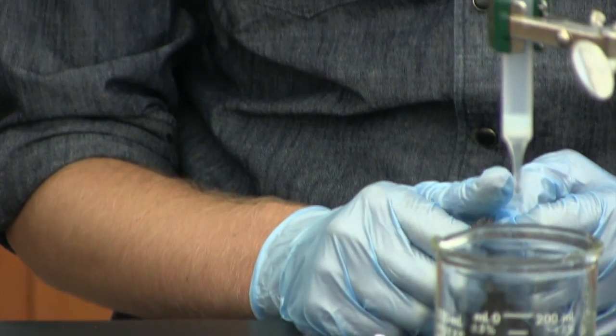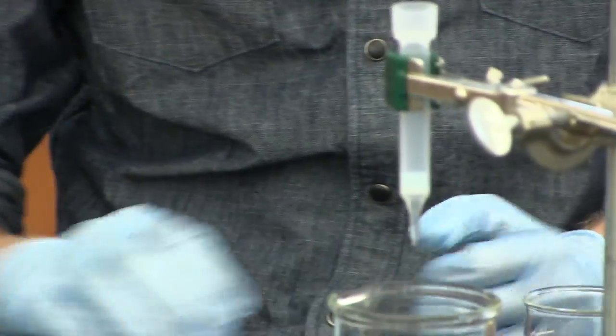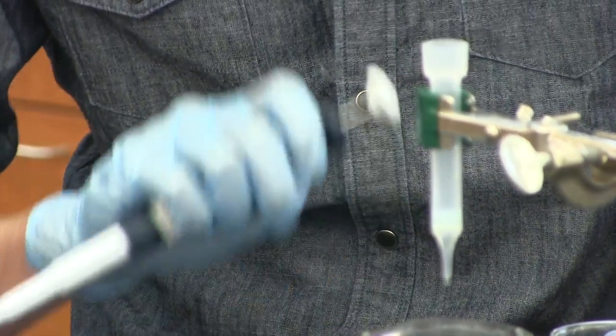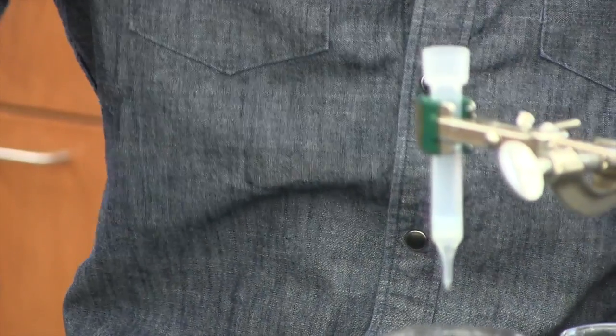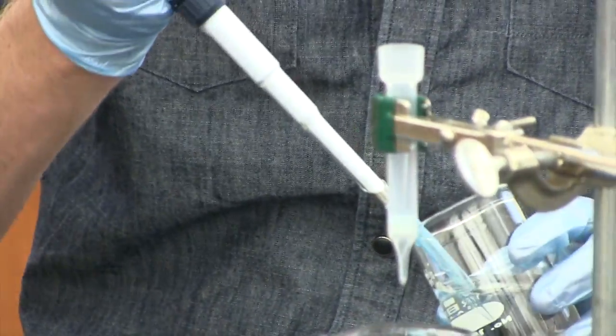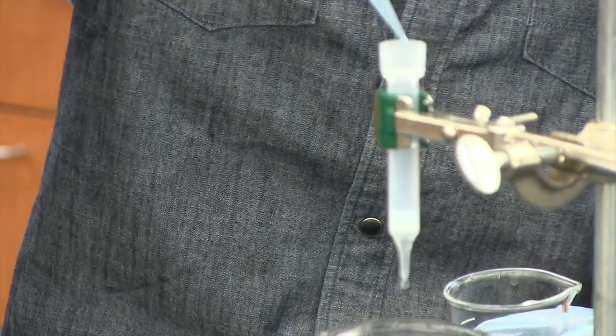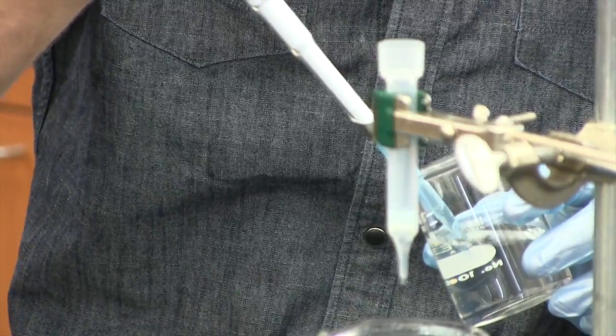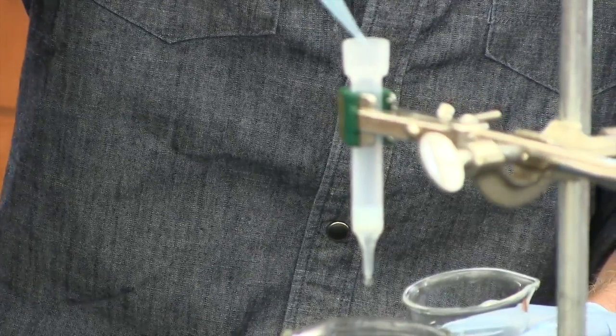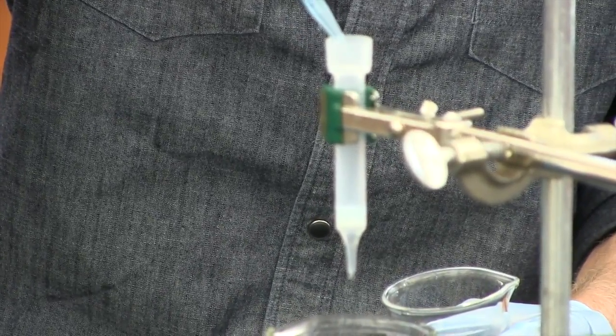With a pipette, gently add more buffer to the top as it's running. We want to fill it up again to the top so that we can put the glass wool on top and soak up the buffer just like we did with the frit. You need to be careful when you're putting buffer in that you don't mix up the resin that we just settled in the bottom.